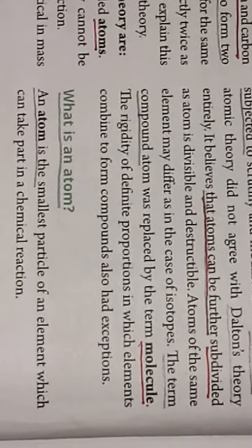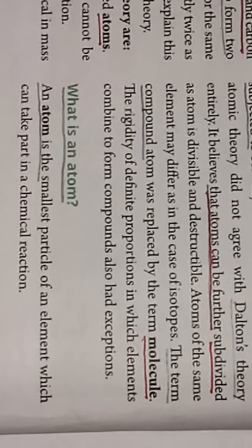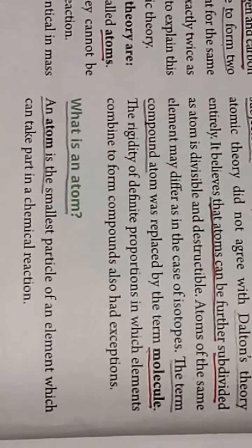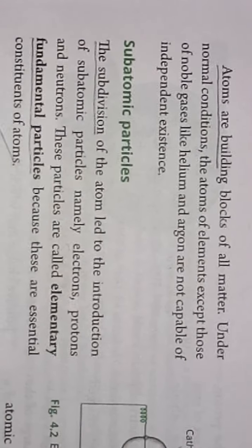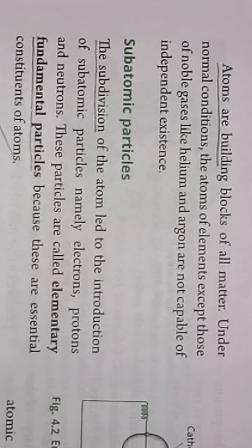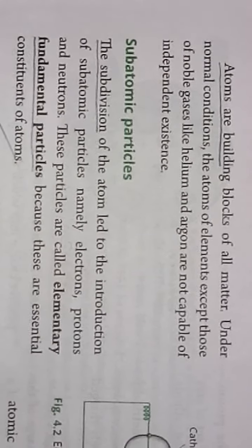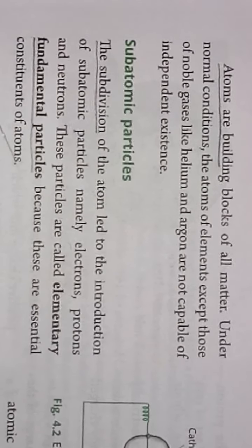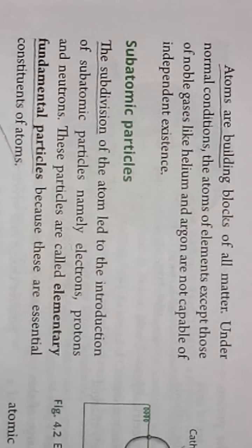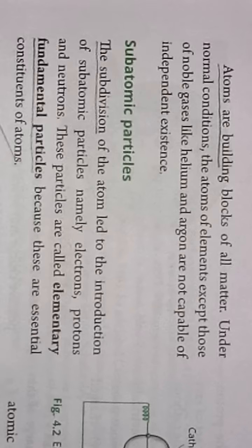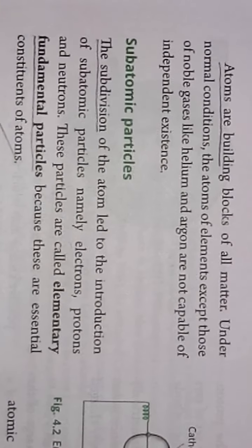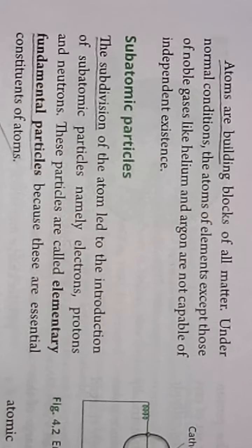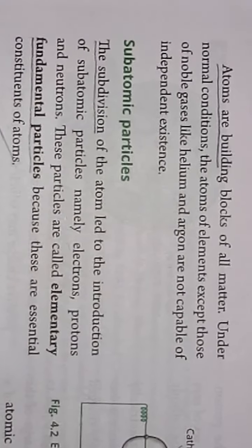Now we will discuss what is an atom. An atom is the smallest particle of an element which can take part in a chemical reaction. Atoms are the building blocks of all matter. Under normal conditions, the atoms of elements — except those of noble gases like helium, neon, argon, krypton, xenon, and radon — are not capable of independent existence. Noble gases are always available in an independent state; they do not combine with other elements. Most other atoms are not available in independent existence.